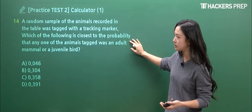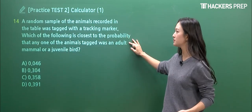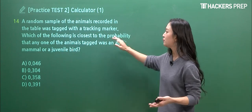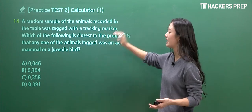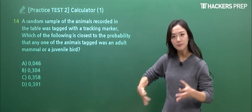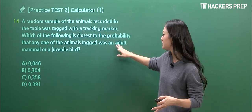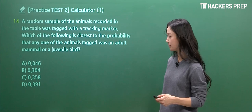And when you go to the first question, they're like, oh, random sample of animals recorded in the table was tagged with a tracking marker. And what's the closest to the probability that any one of the animals - so among the total, they're asking for the probability that it was an adult mammal or juvenile bird.